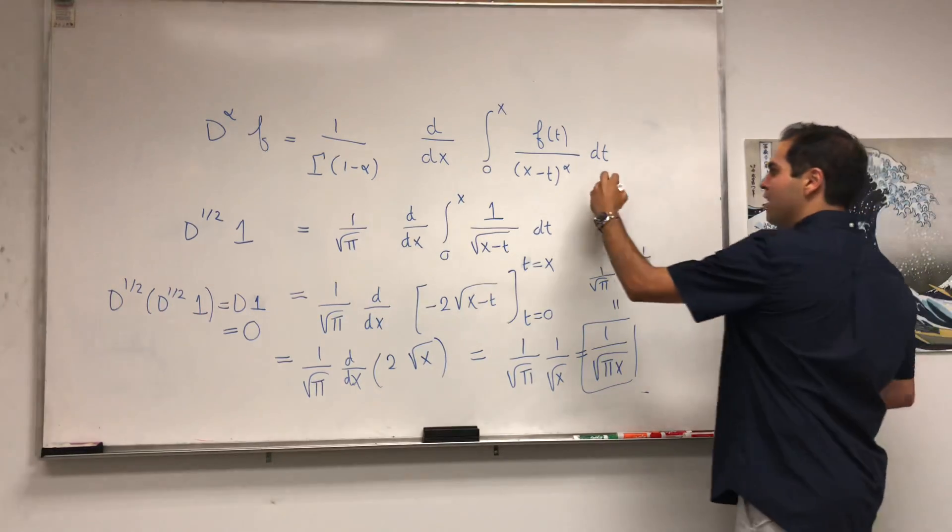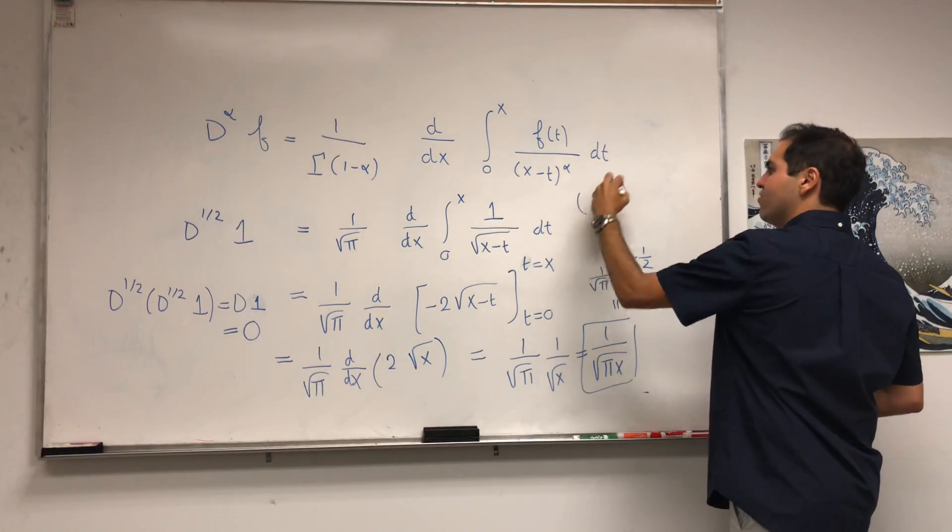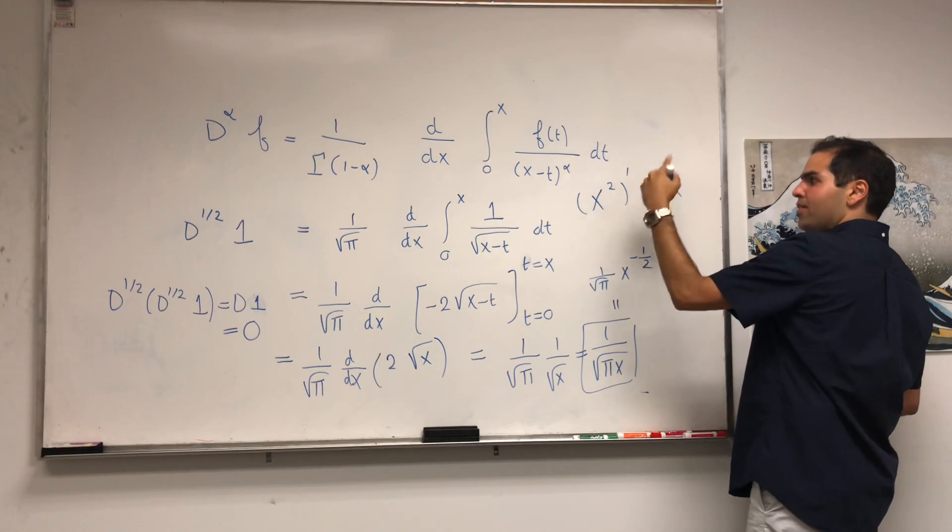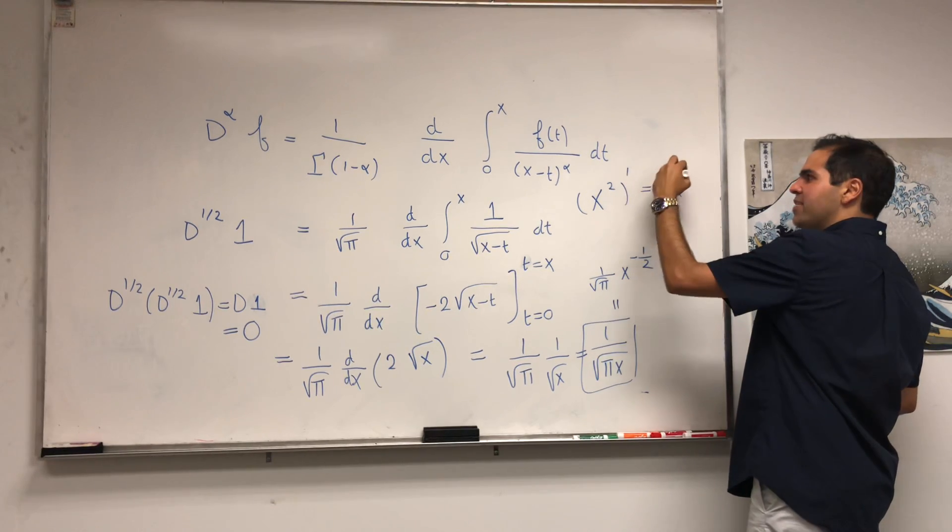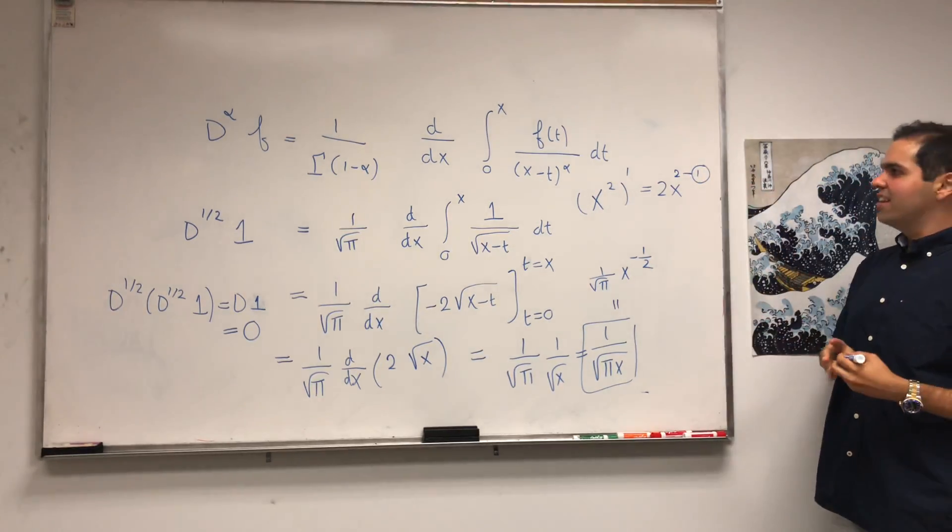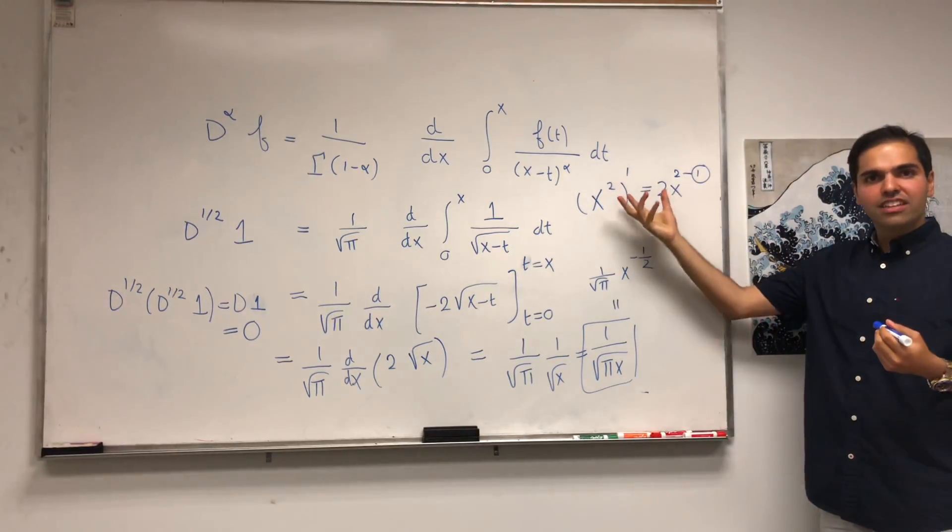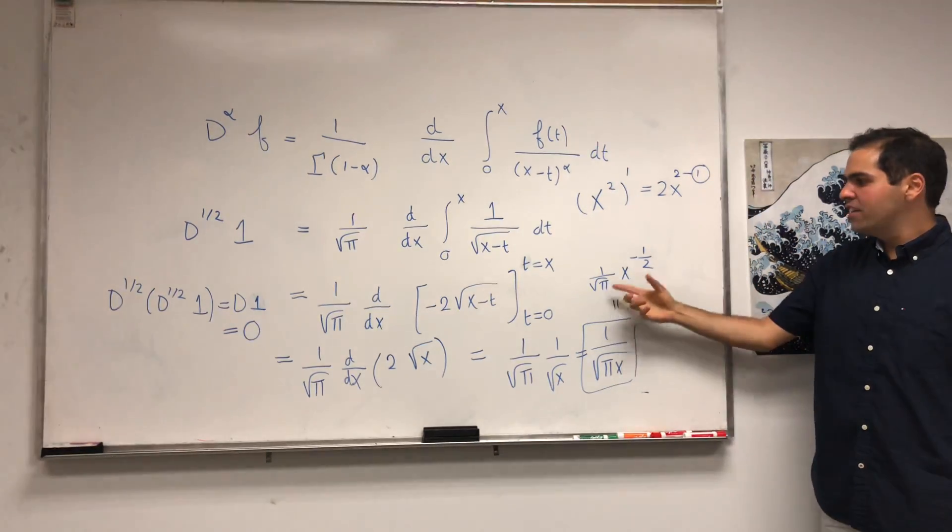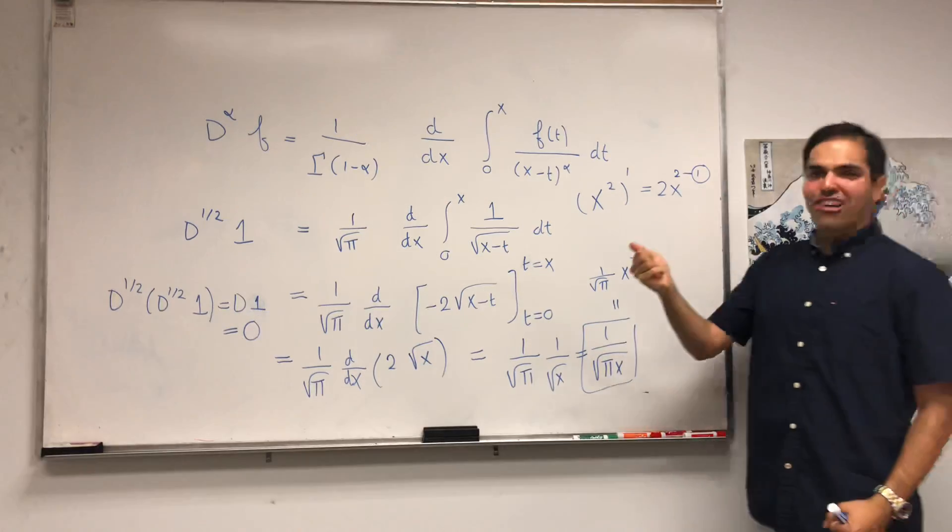Which makes sense in terms of the power rule, because if you differentiate for example x squared, then you get 2x, which is the same as 2x^(-1). So philosophically speaking, the derivative takes 1 out of the exponent, well the half derivative should take half of the exponent away.